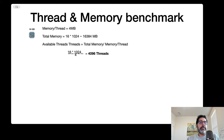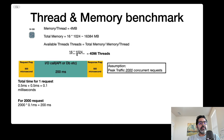Looking at thread and memory benchmarks - to see how many threads will be created - in my case one thread takes 4 MB of memory. I'll show the calculation later. With 16 GB of RAM, that's 16,384 MB divided by 4 MB per thread, giving me 4,096 threads.